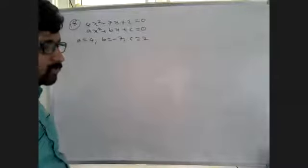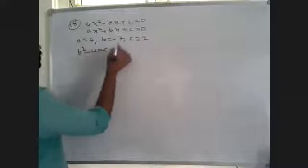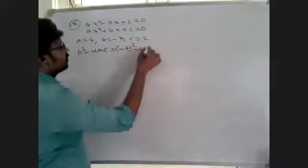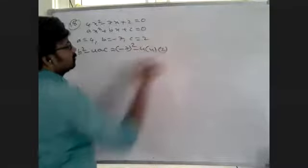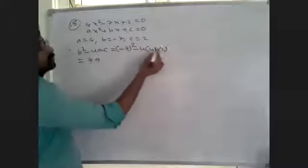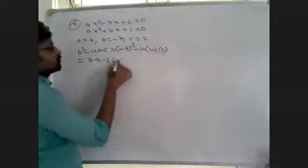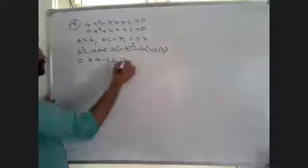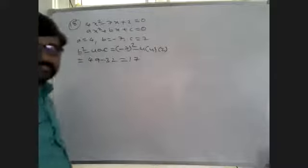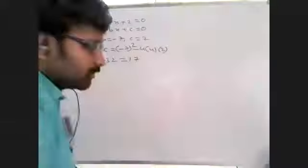First we have to find the value of b squared minus 4ac. That is b squared minus 4ac equals minus 7 whole squared minus 4 into 4 into 2, which equals 49 minus 32, giving us 17. So 17 is the value of b squared minus 4ac in this question.